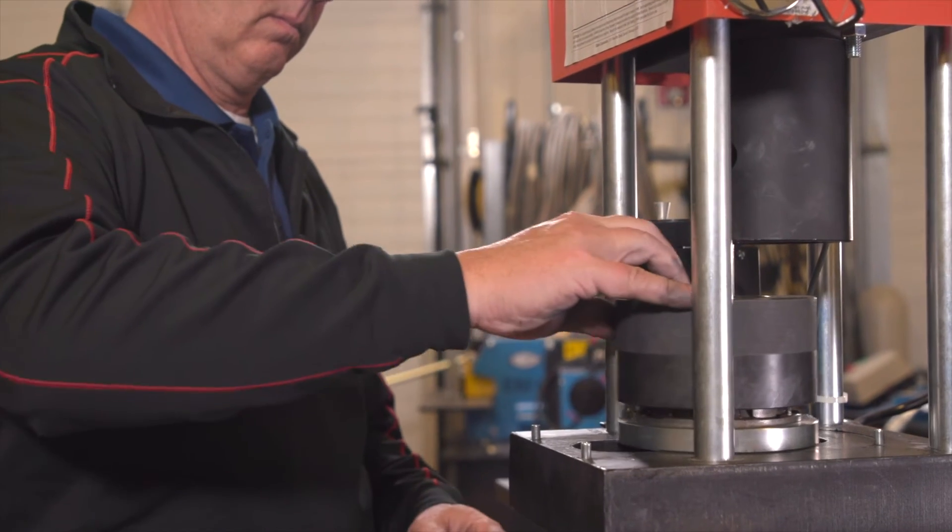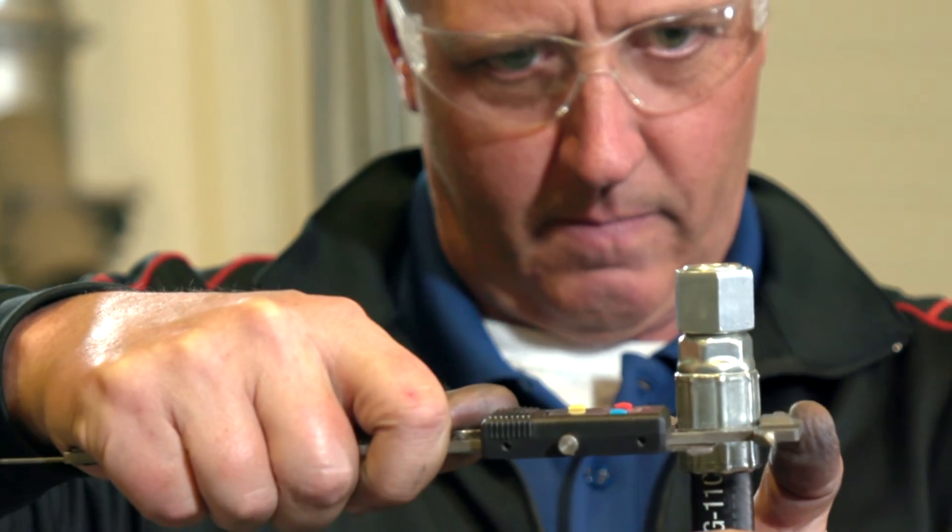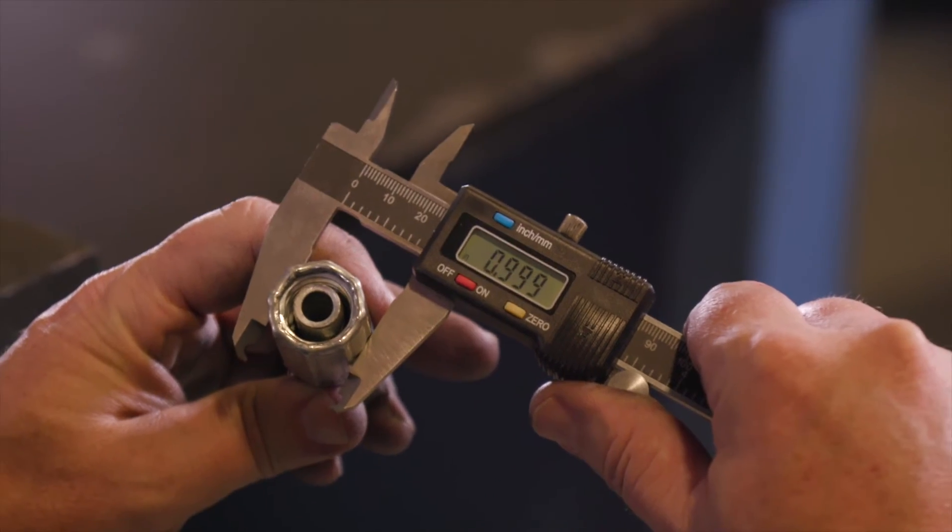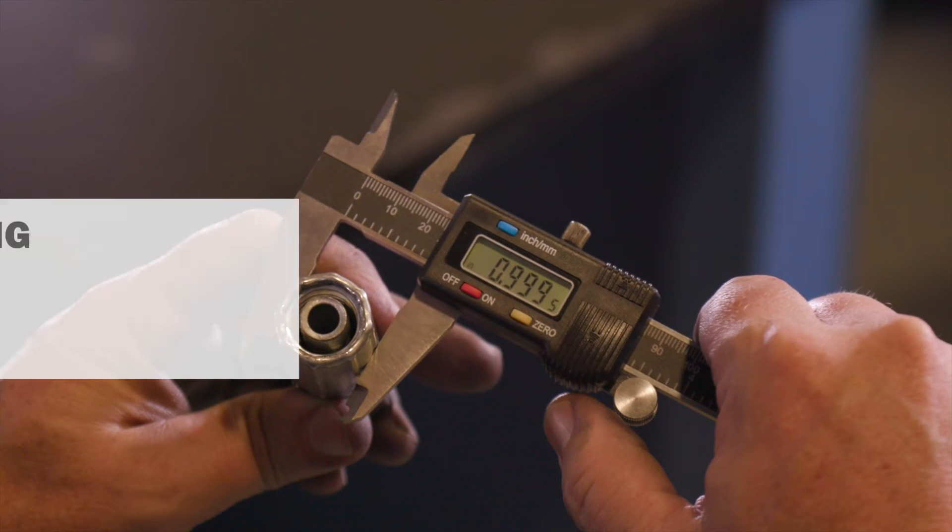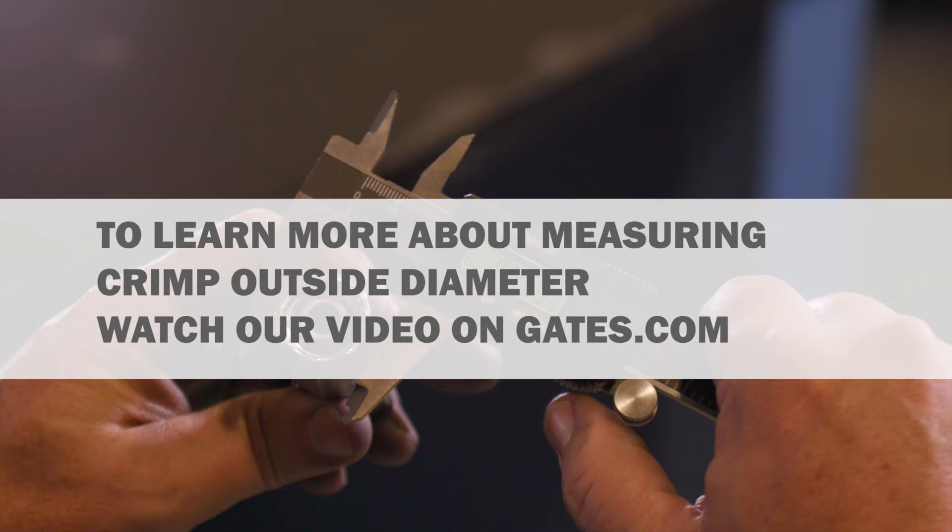Remove the coupling and measure the crimp diameter, which should measure 1.000 inches, plus or minus three thousandths of an inch. To learn more about measuring crimp outside diameter, be sure to watch our video on the topic.